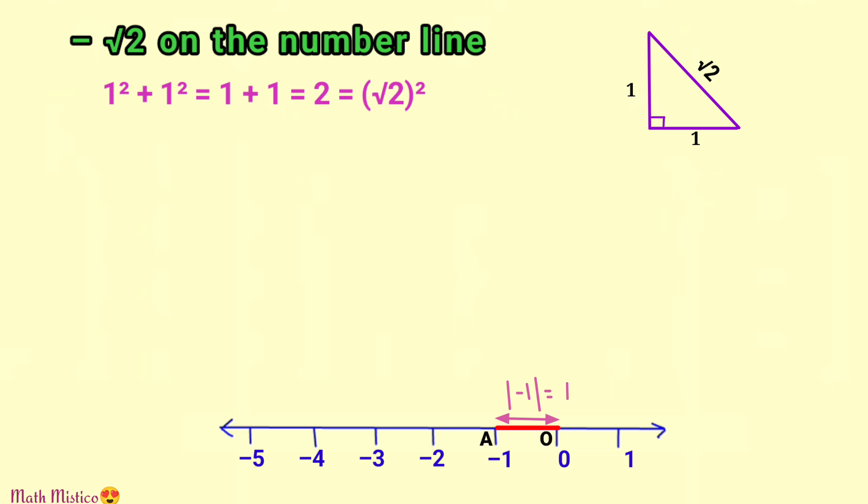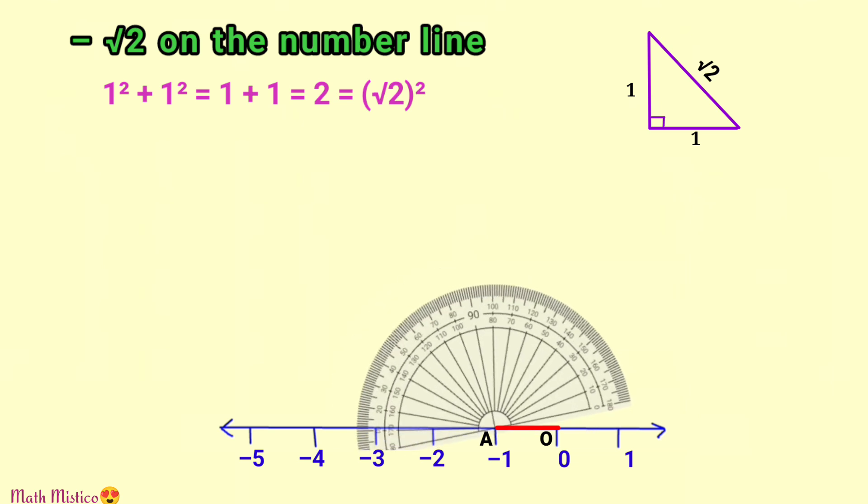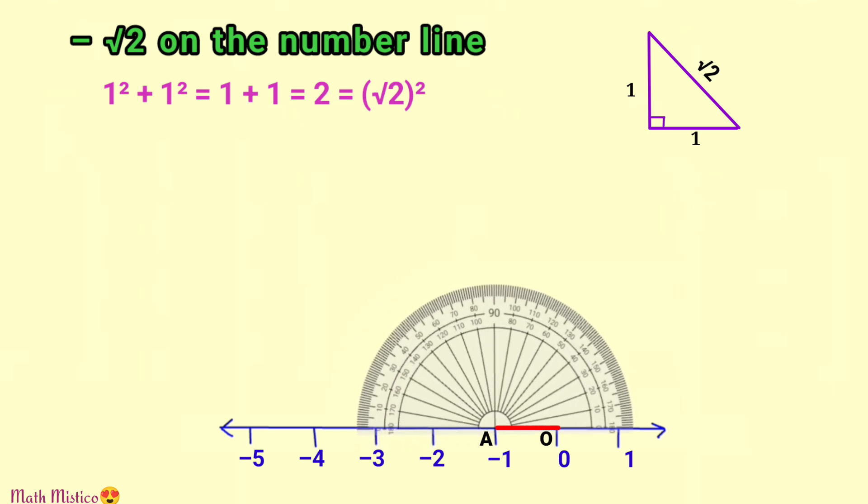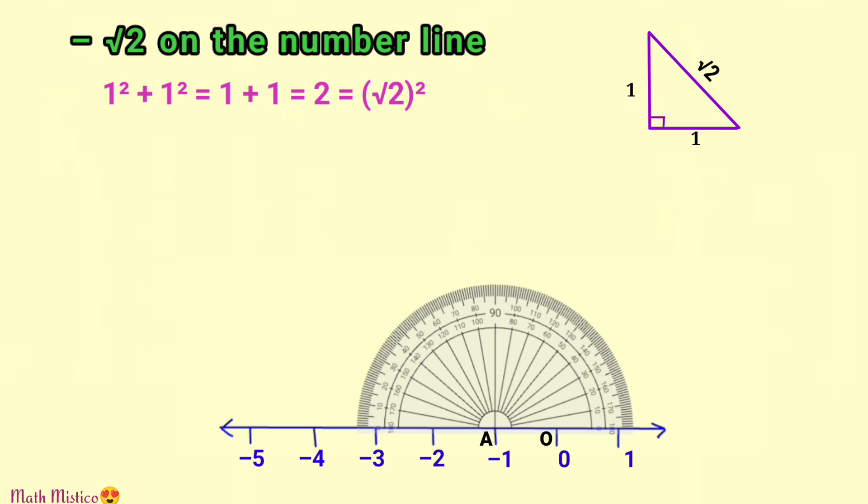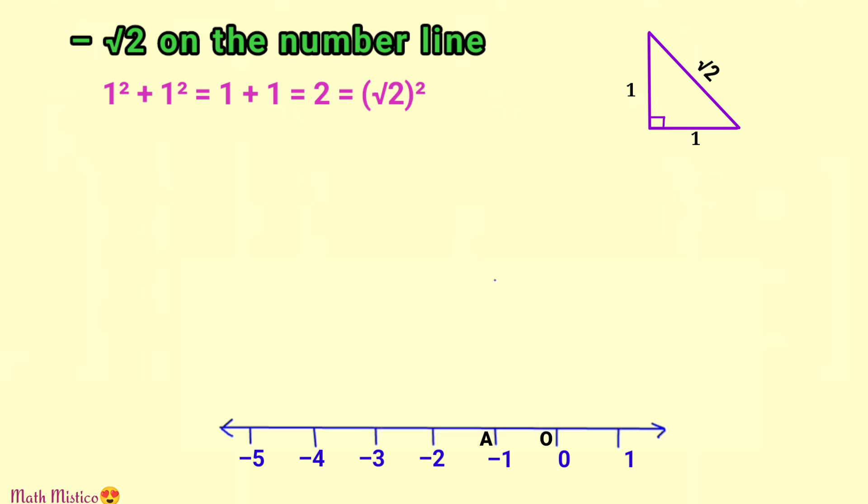So OA is equal to one unit, and now we will draw the perpendicular at this point. You may use a protractor or compass for this. I'm keeping my protractor at this point, aligning it with the line, and marking the point for 90 degrees.